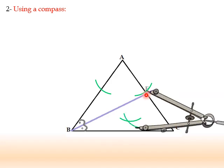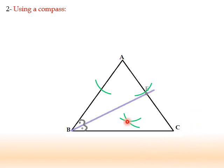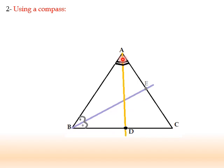And, the point of intersection of the two arcs is joined to the vertex A to form the bisector of an angle. So, now, I can say that BAD equal to DAC.